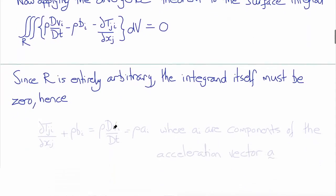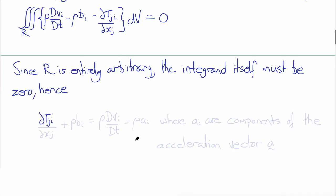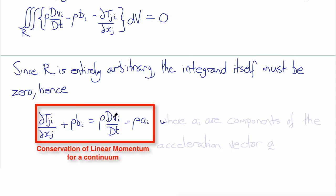Hence we obtain the familiar differential form of the conservation of linear momentum: del T_ji/del x_j plus rho b_i, the two terms we already derived in the equilibrium equation, equals rho times material derivative with respect to time of velocity, which is the acceleration rho a_i. So surface forces plus body forces equals inertial forces.